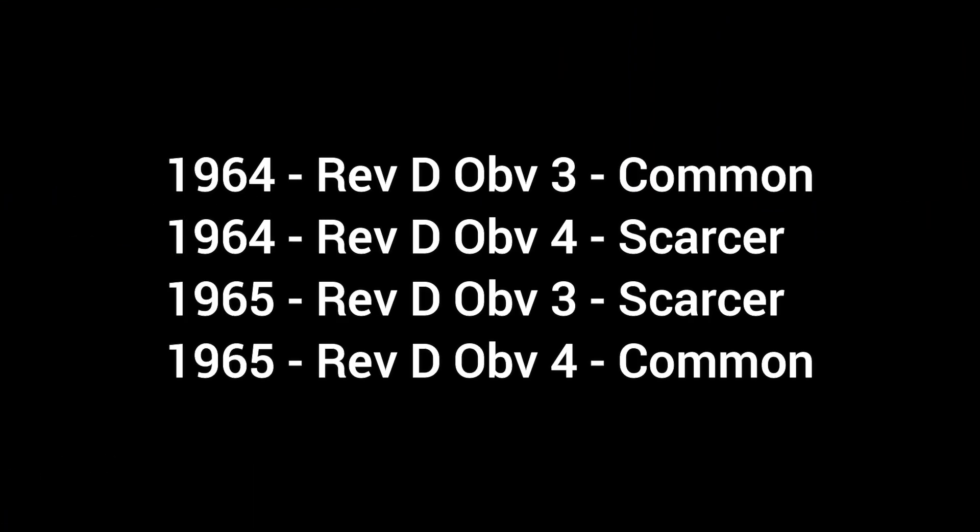It does give two varieties per year, so in 1964 the Obverse 3 is the common one and Obverse 4 is the scarcer one, and in 1965 Obverse 3 is the scarcer one and Obverse 4 is the more common.